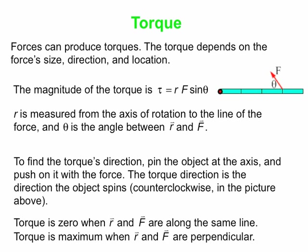A couple things to note: torque is zero when the displacement and force are along the same line, and you get maximum torque when R and F are perpendicular to one another.